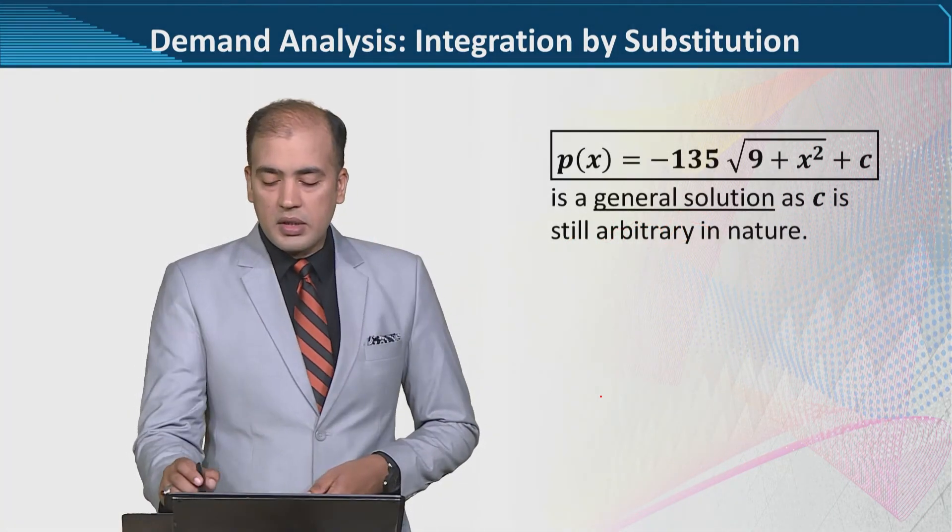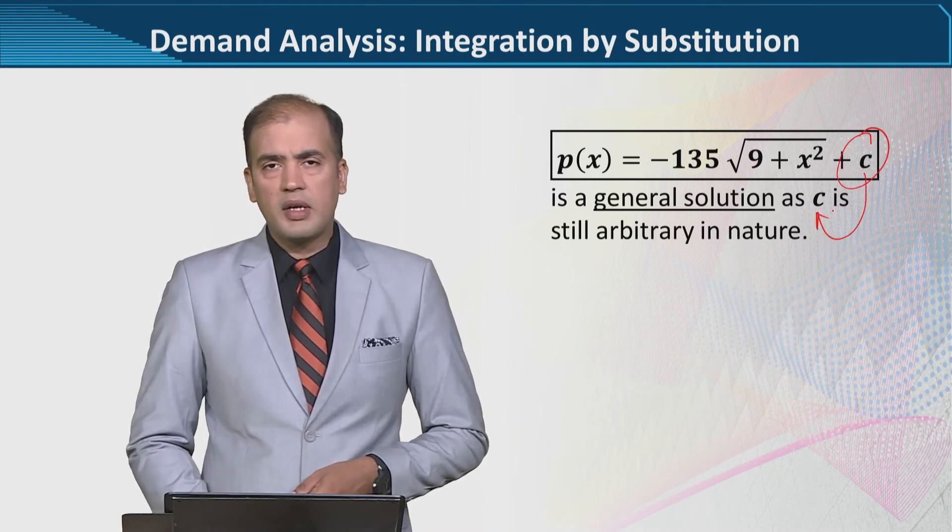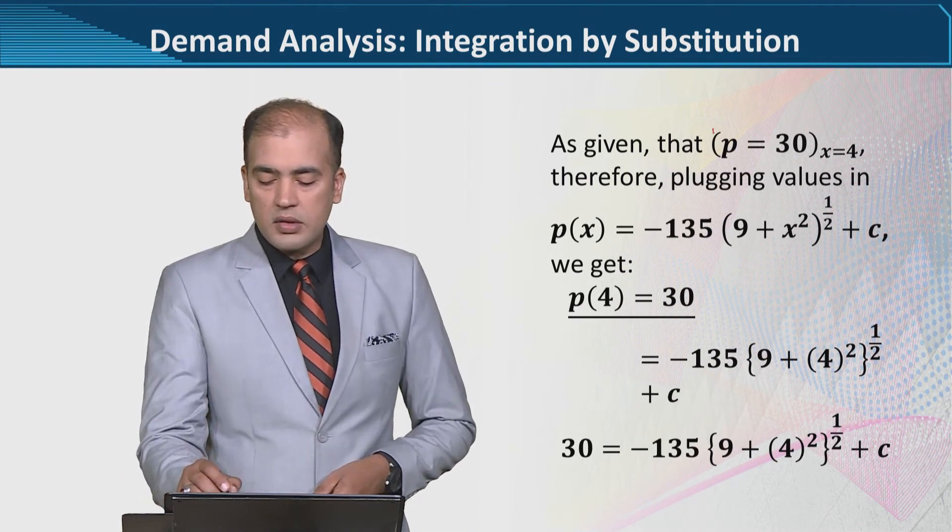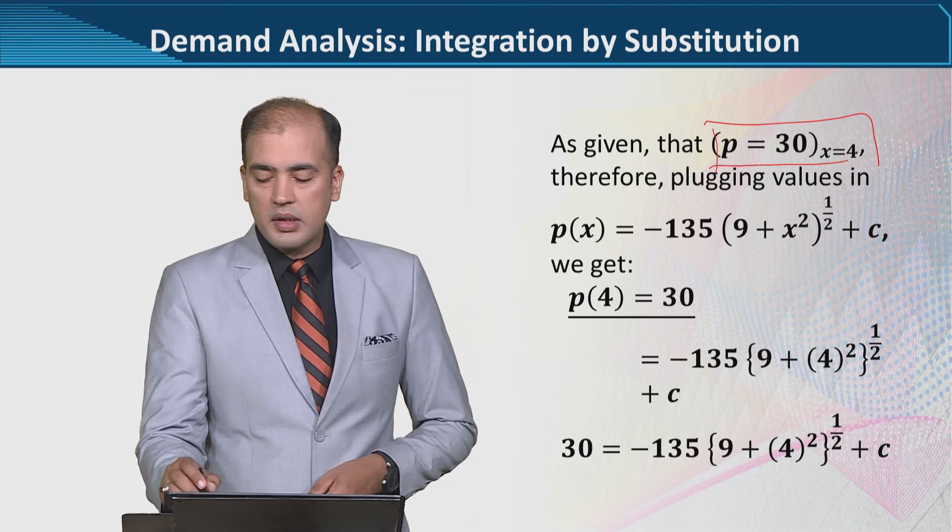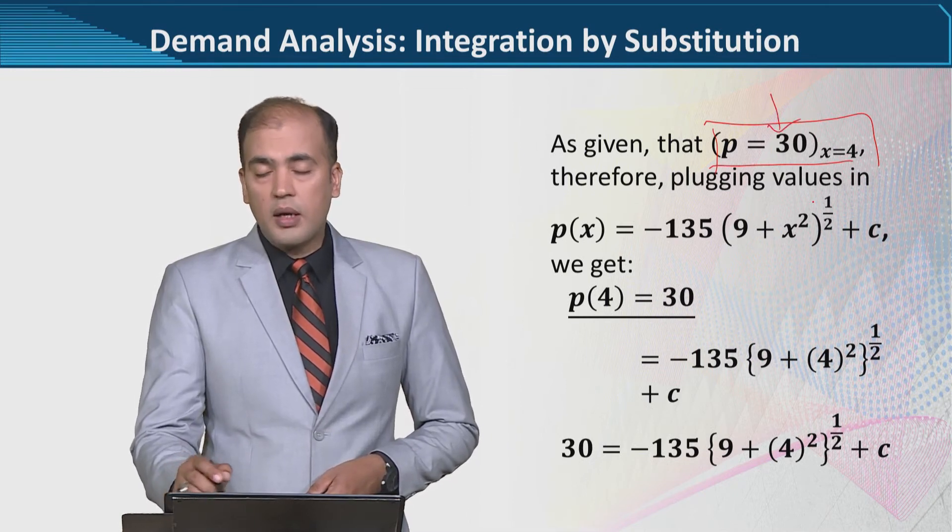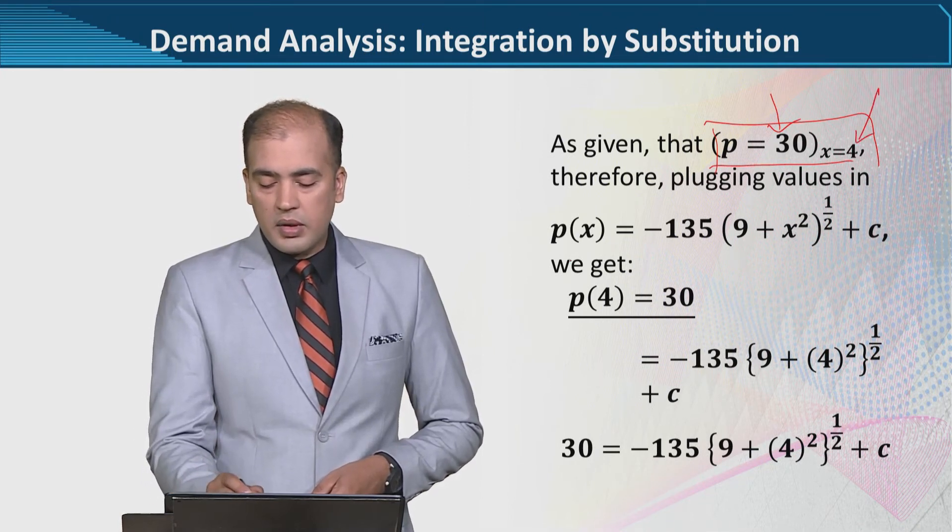We call this the general solution because it has c, which is not yet definite and is undetermined. In addition, another situation given at the start of the question - you can reverse the video and see - was that if price p equals 30, then x would be this value. Now using this knowledge, we will substitute here.